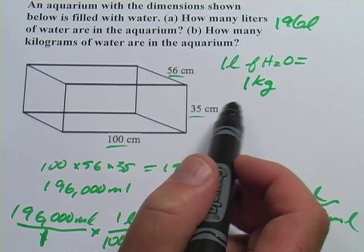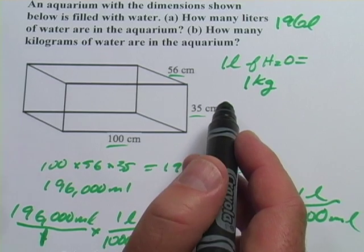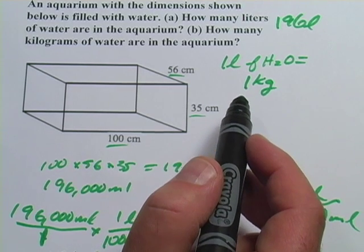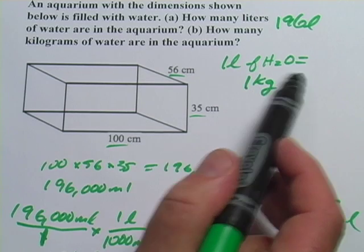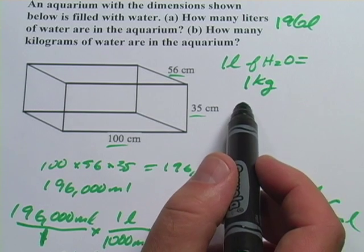Now that's when water is at 39 point something degrees Fahrenheit or 3 point something degrees Celsius. But in general, a liter of water has a mass of a kilogram.